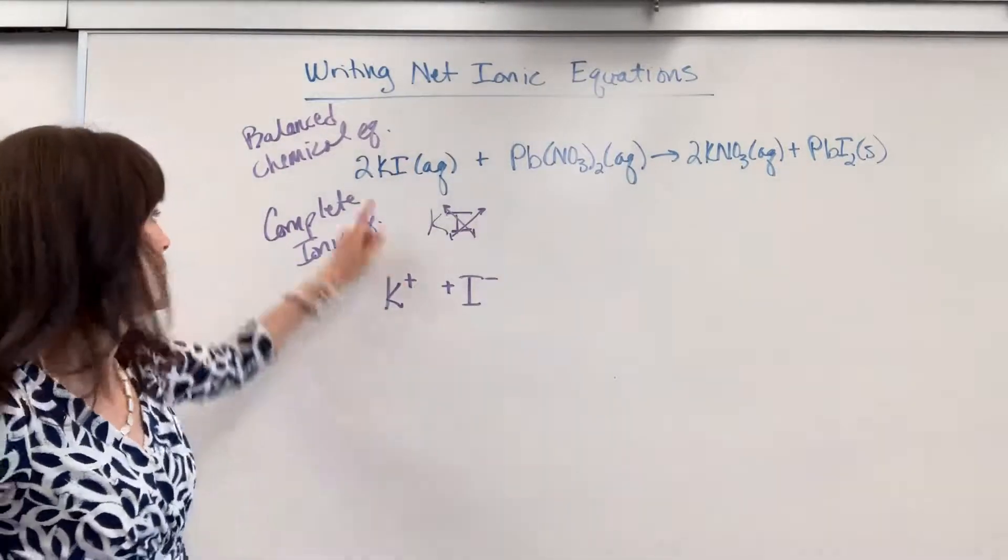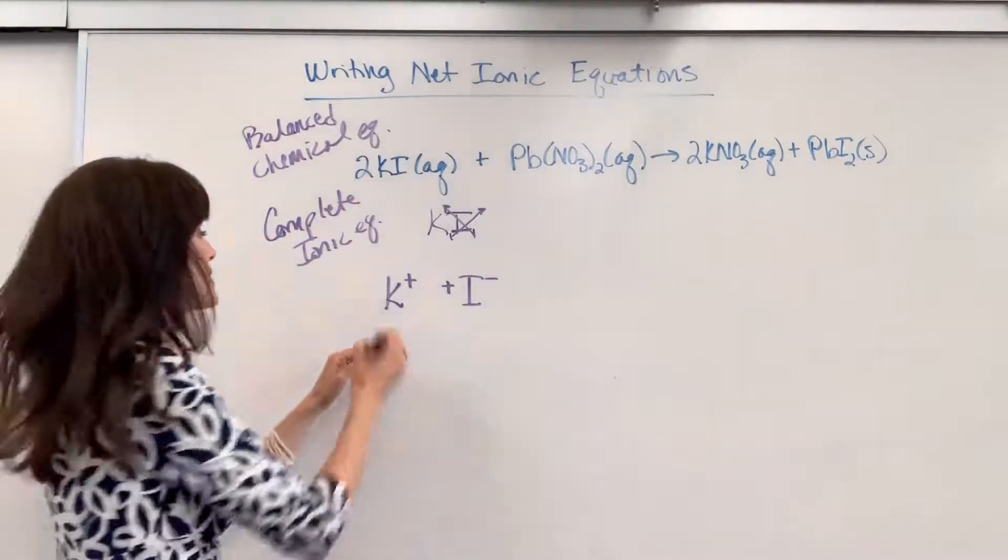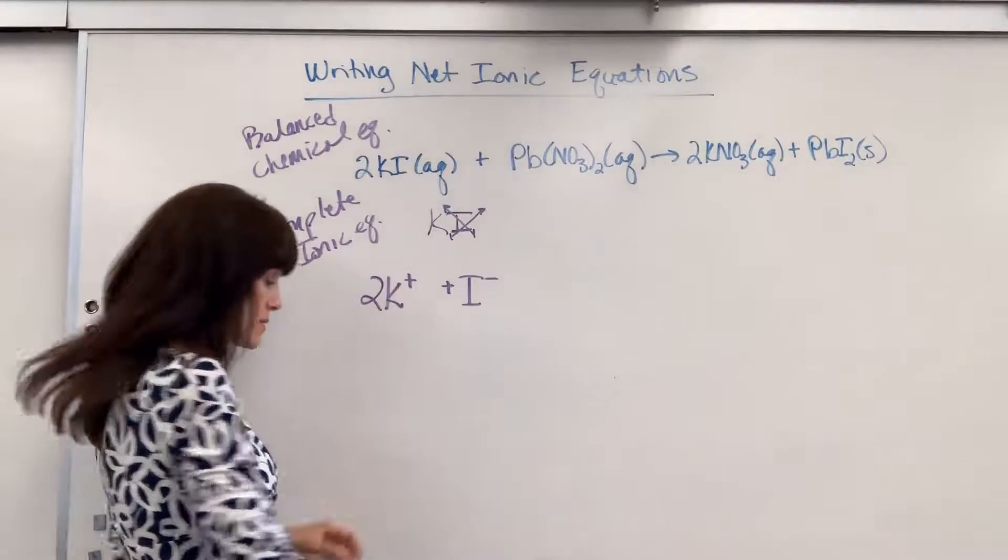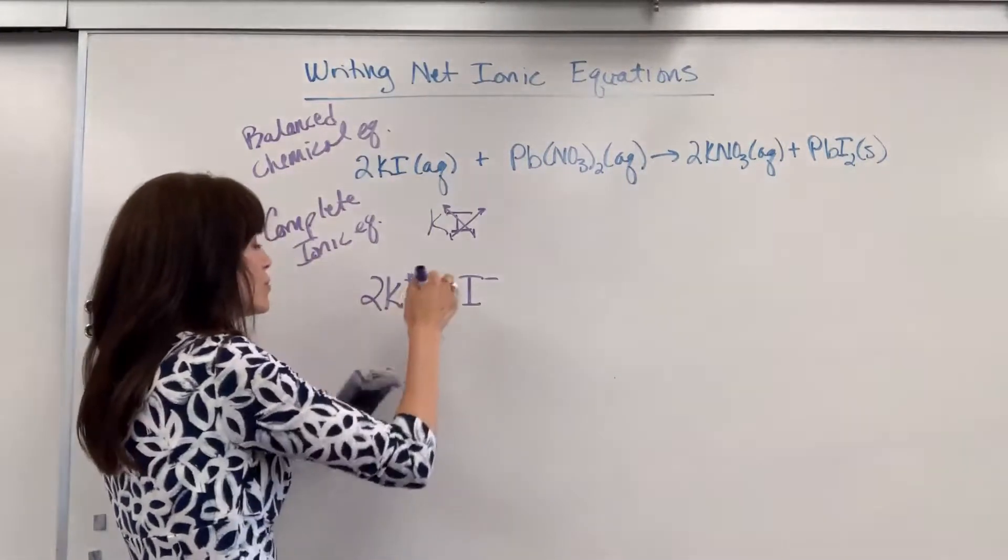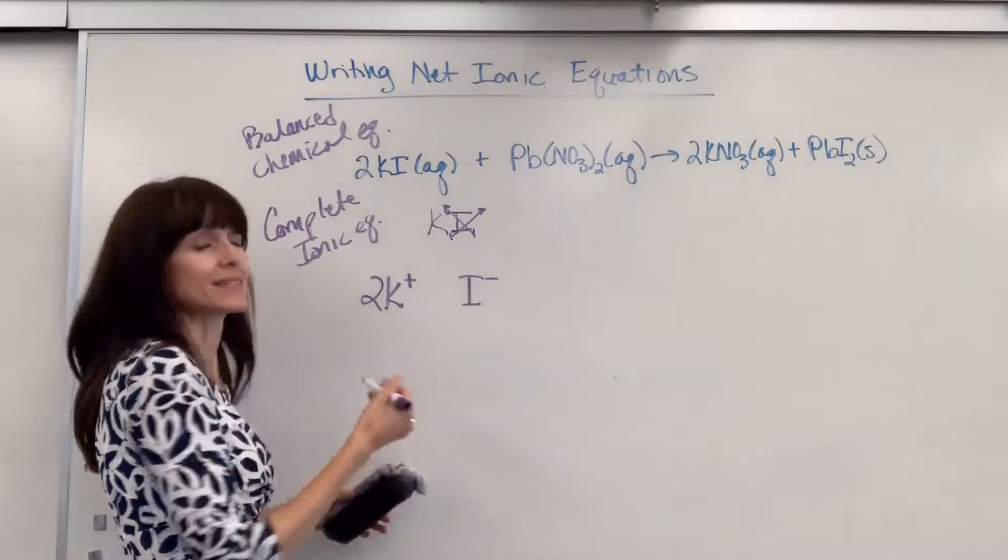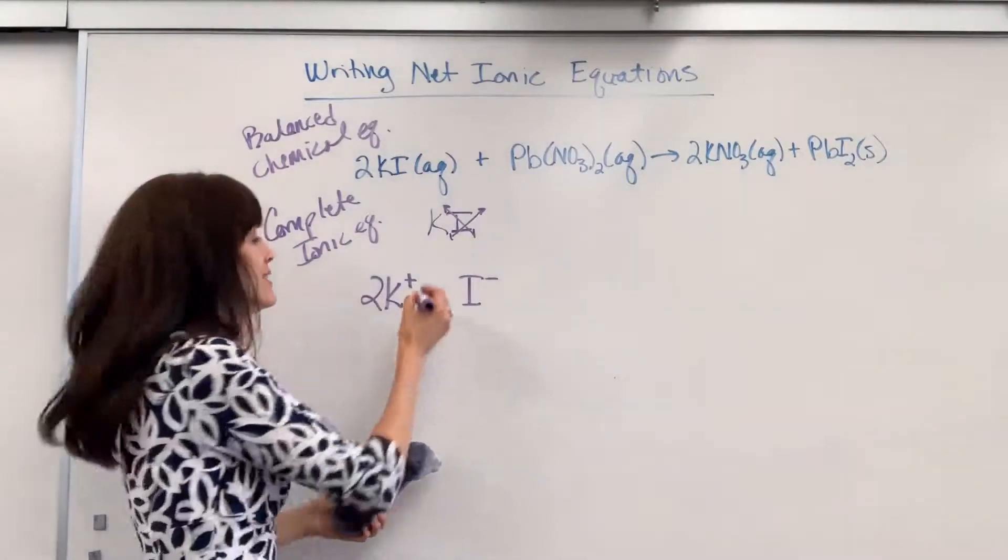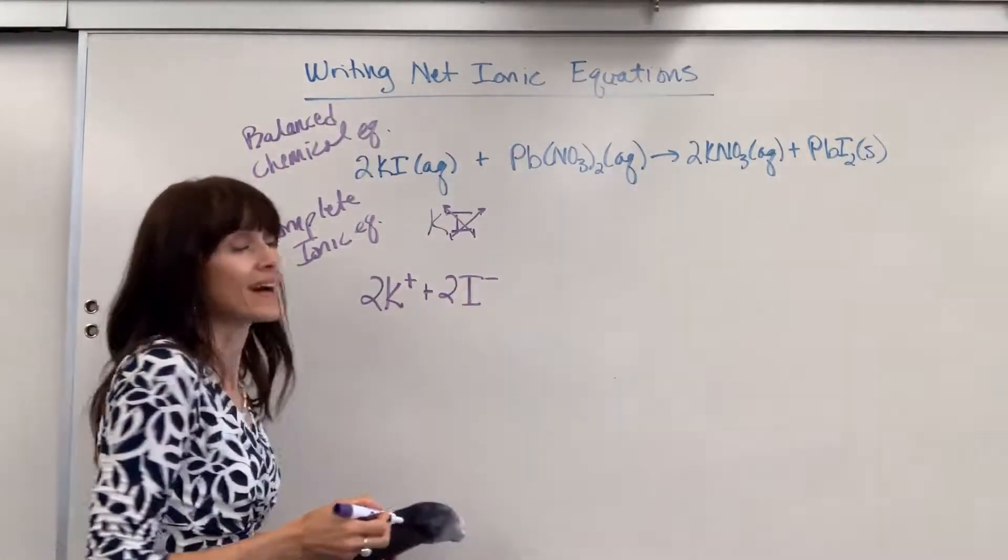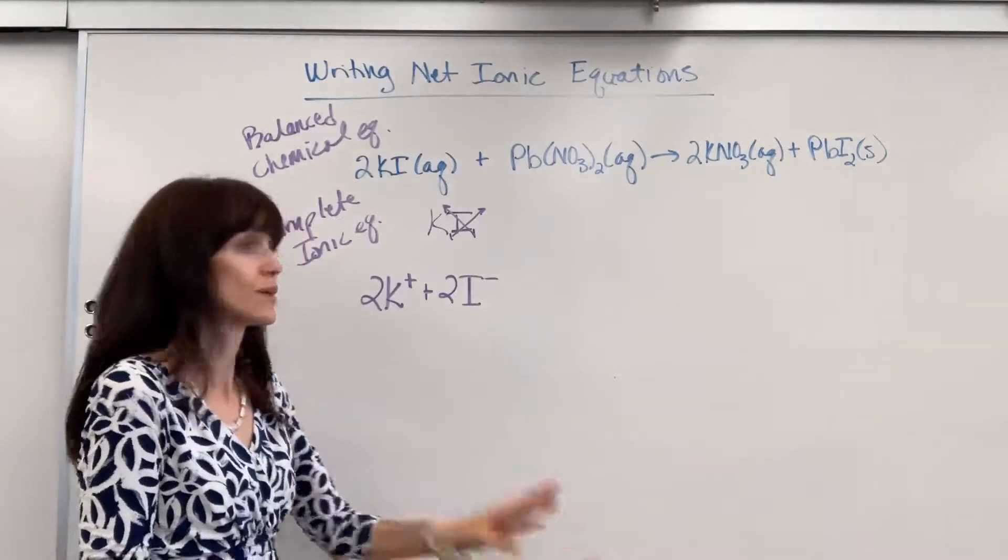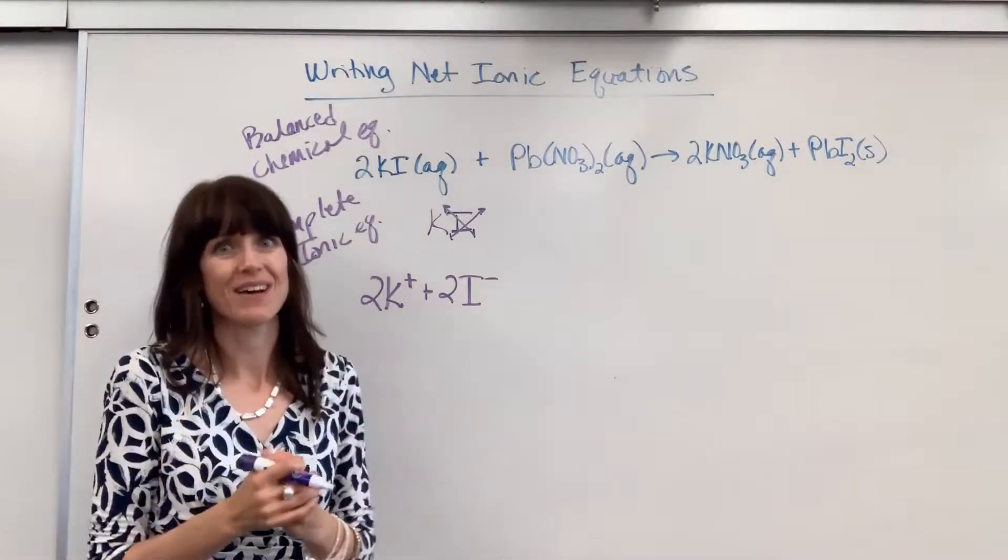Now I have to look and say, well, how many do I have? There's a two in front of that. I'm going to have two potassium ions and two iodide ions. So we dissociated potassium iodide.